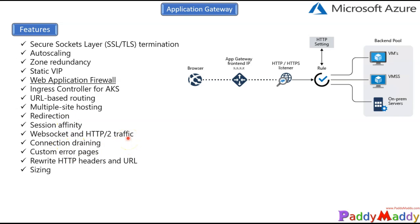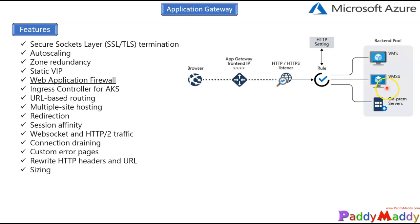For connection draining — useful when you are planning backend pool service updates — this feature enables graceful removal via backend HTTP settings and can be applied to all backend pools during rule creation. Once enabled, Application Gateway ensures that deregistering instances of the backend pool do not receive any new requests, while allowing existing requests to complete, so you can perform actual maintenance on your web application servers.